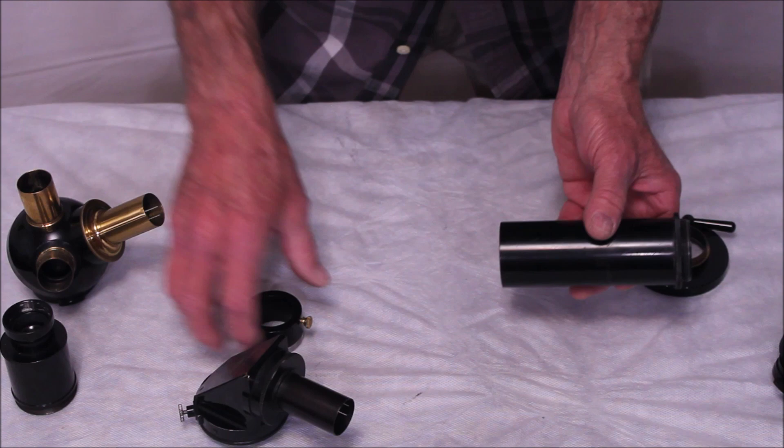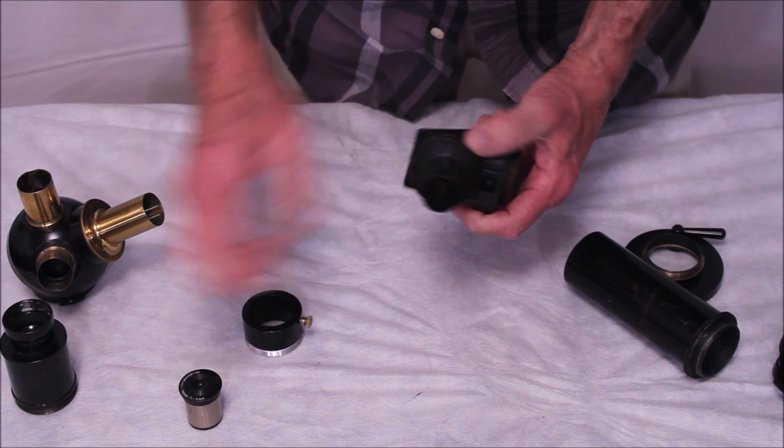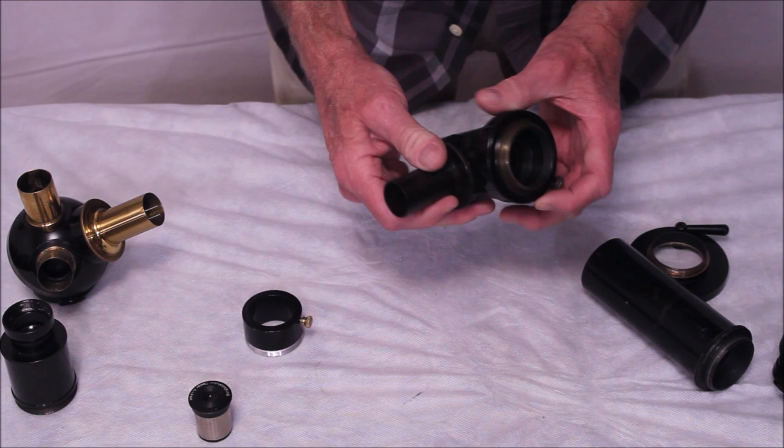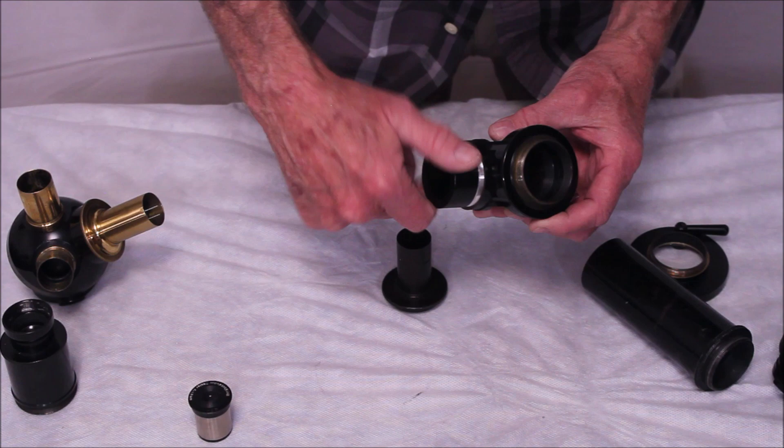This is the Zeiss Zenith prism, a star diagonal in modern terminology. And this is of course designed for the 965 eyepieces, like the ones that came with the Zeiss. This is the 47 power. And this adapter here. This is of course a standard M44 thread here. I could, if I wanted to, use this. I have my special adapter. So I can use inch and a quarter eyepieces in there if I want to with this.